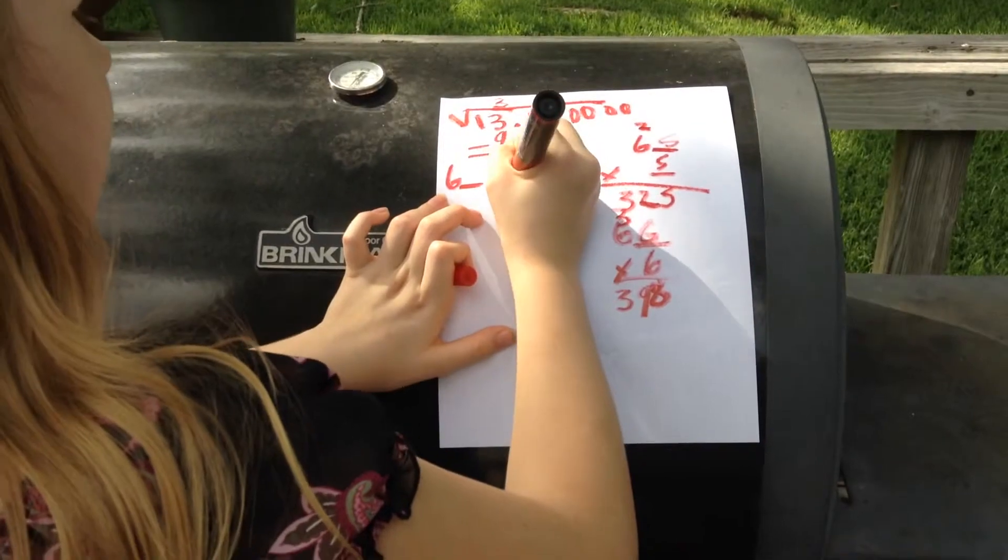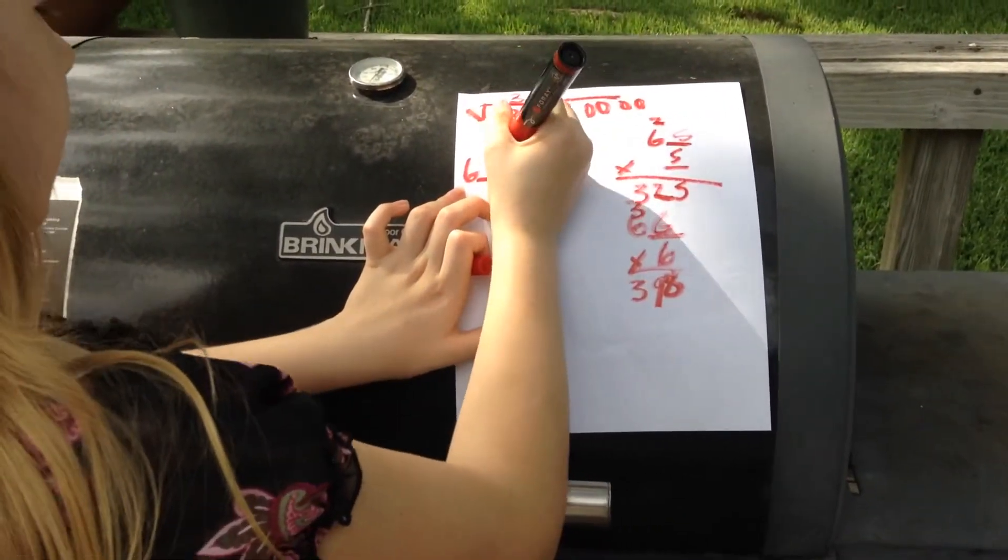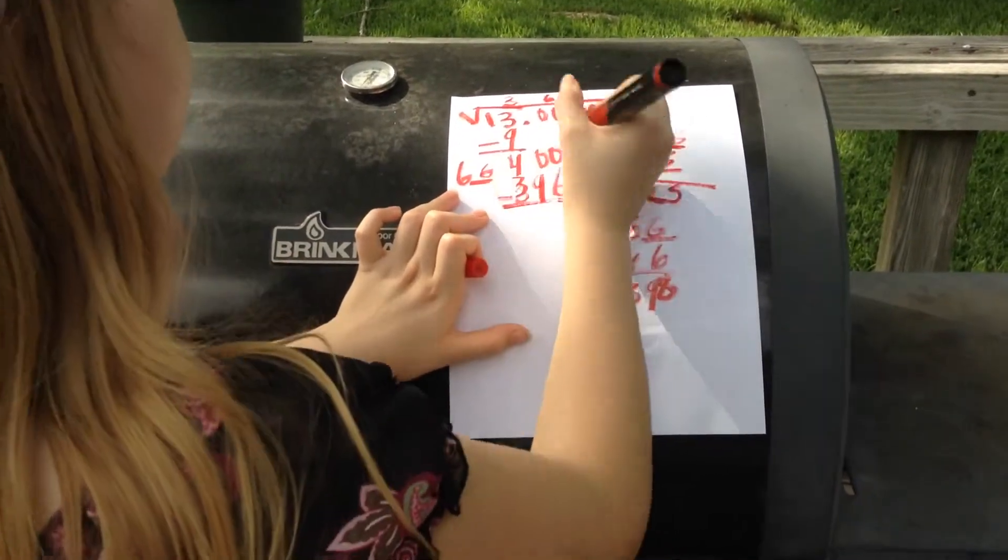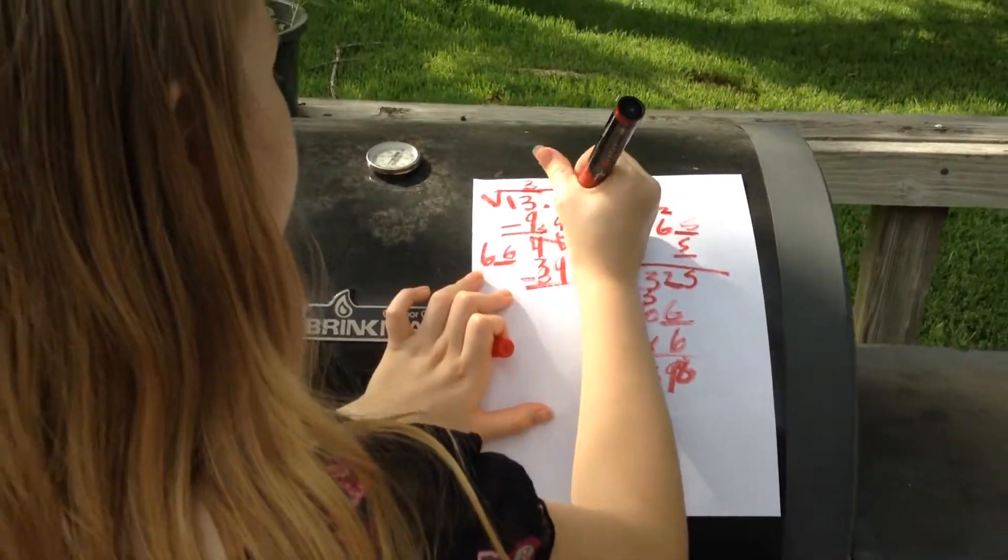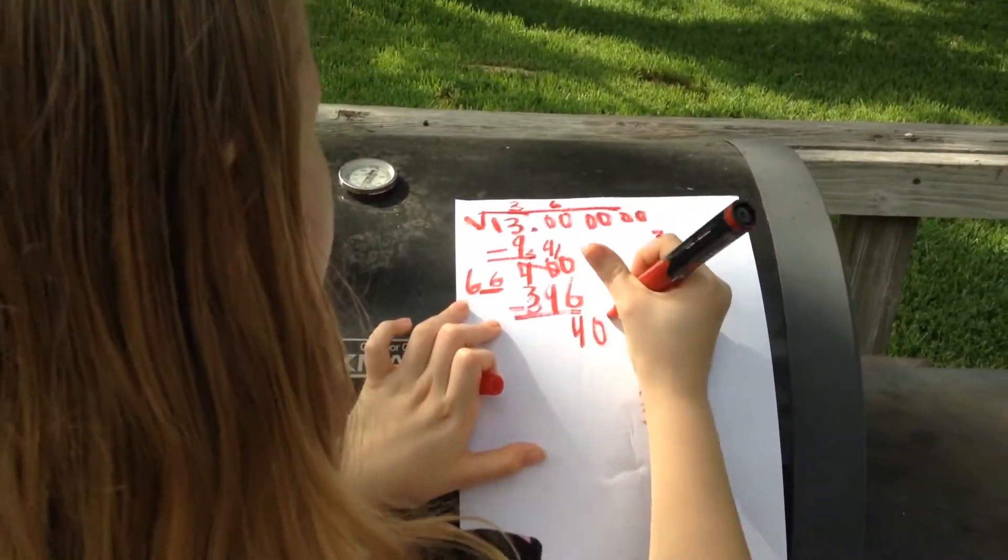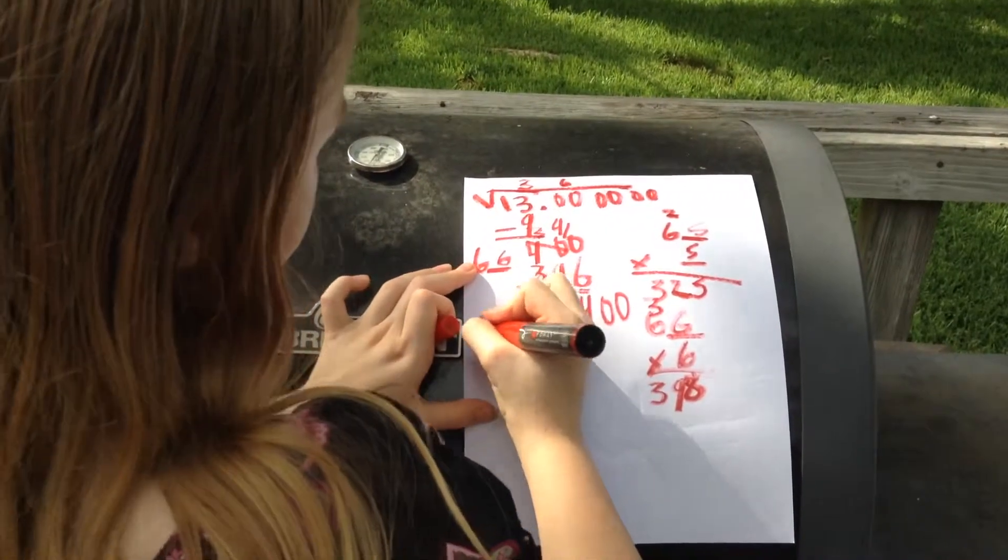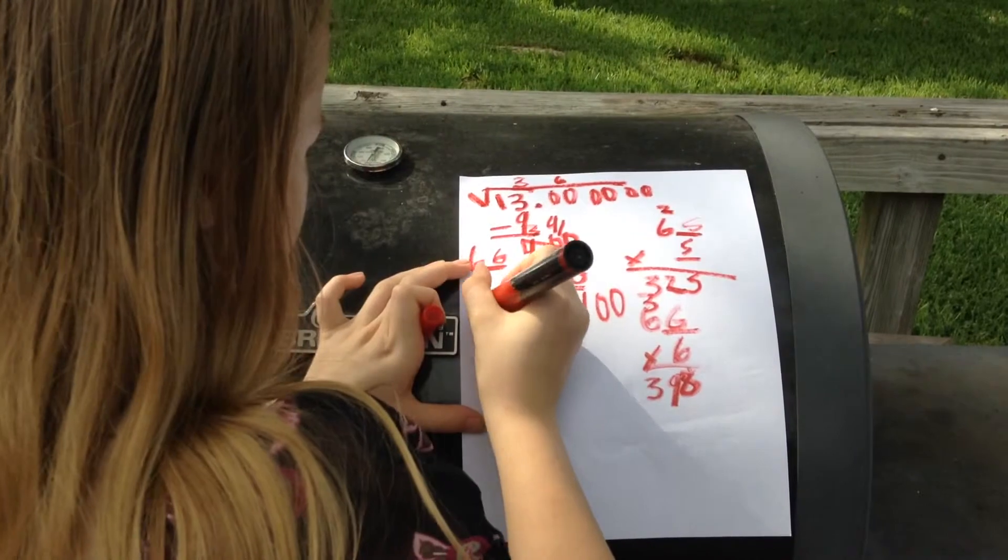396 was the closest I could get. And then I put 6 up here. And then a 6 here. And then I subtract. And then I bring it down. And then I double the 6. Make that 7.